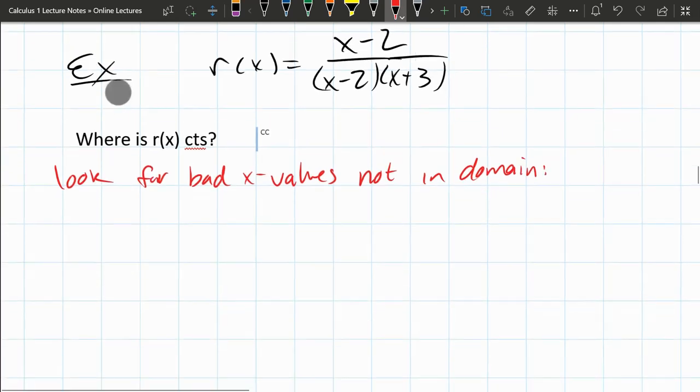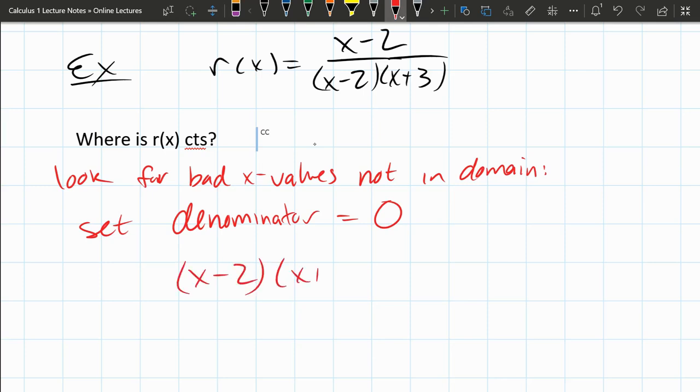Bad x values not in the domain. We're going to set the denominator equal to zero. This denominator is already factored. Your problem might be multiplied together—you'd have to factor it out. But this one's already factored.